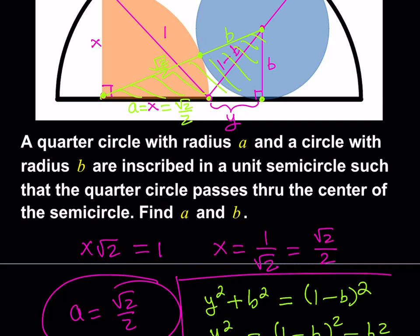Base is root 2 over 2 plus y, because we're talking about this triangle. Let's shade it one more time to make it clear. Let's write down the Pythagorean theorem for the last time and solve for b.